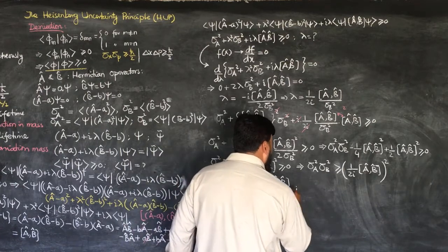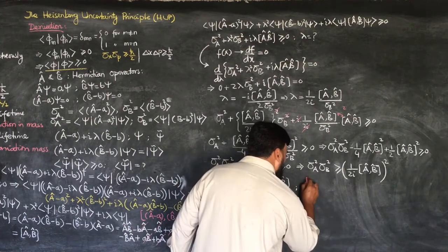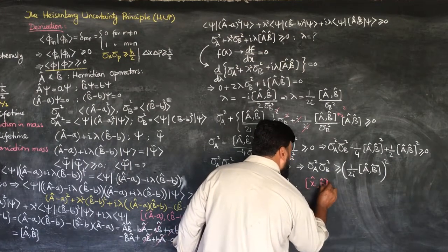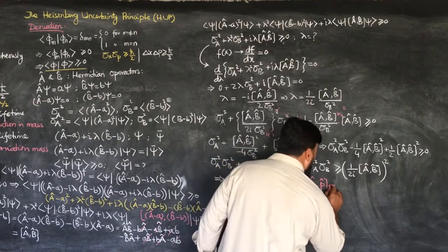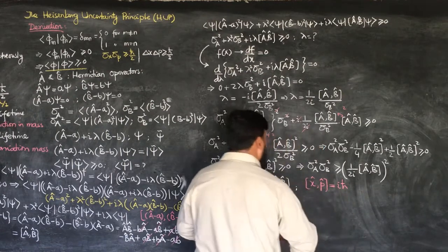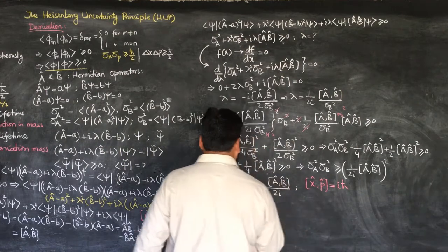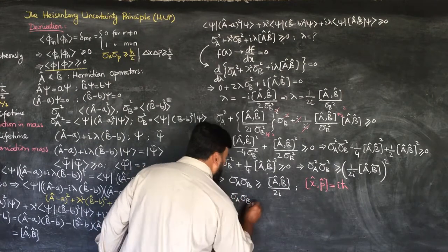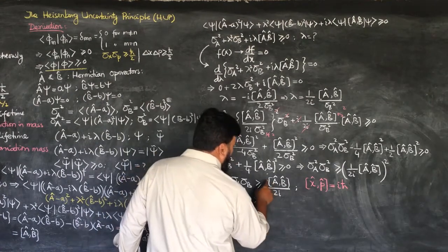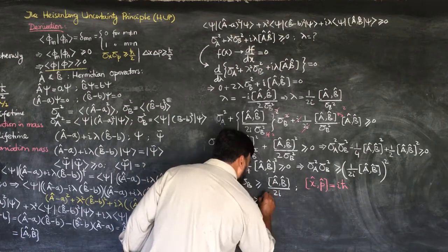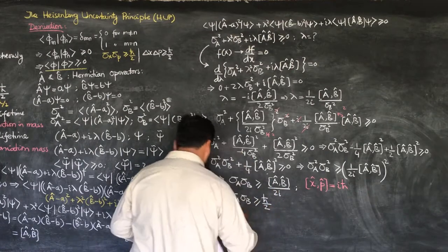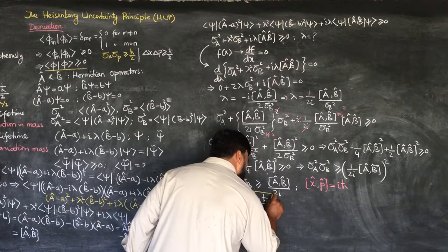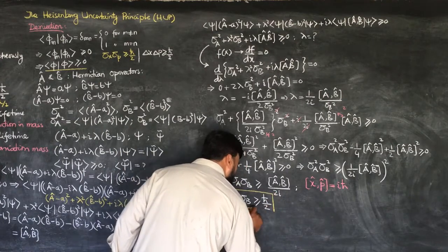Now taking the commutation of X and P: for [A,B] I substitute the canonical commutation relation [X,P] = iħ. Putting iħ into the expression, σ_Aσ_B ≥ iħ/(2i), and the i's cancel, giving σ_Xσ_P ≥ ħ/2. We have derived the Heisenberg Uncertainty Principle.